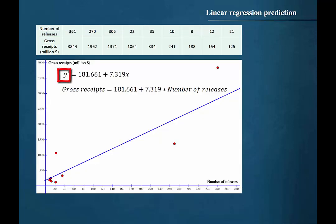Y prime, the symbol for the predicted value of the dependent variable, represents gross receipts and x, the independent variable, represents the number of releases. So we will substitute 200 into the linear regression equation for the number of releases.